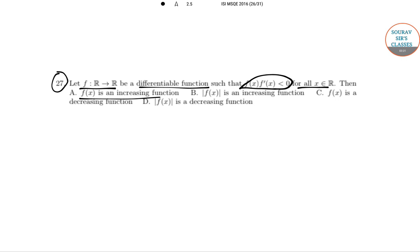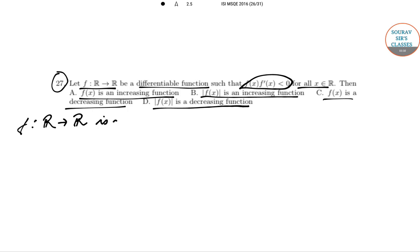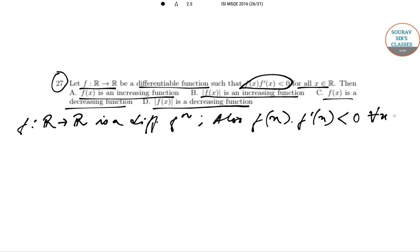We need to determine whether f(x) is an increasing or decreasing function, and whether |f(x)| is an increasing or decreasing function. We have been given that f(x) is differentiable and that f(x) · f'(x) < 0 for all x ∈ R. So the key question is: what does this condition tell us about the behavior of |f(x)|?